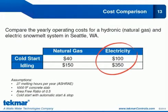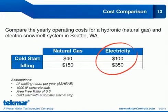Another cost comparison looks at Seattle, Washington, where ASHRAE data shows only 27 melting hours per year. Even though natural gas is still cheaper — $40 for natural gas versus $100 for electricity on a cold start — the overall operating costs with electricity are so low in a climate like Seattle that you're probably not going to see a return on investment by going with a hydronic system. In a low-melting-hours climate like Seattle, you would probably want to install an electric snow melt system.